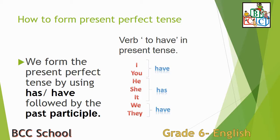First, we have to know the verb 'to have' in the Present Tense: I have, you have, he has, she has, it has, we have, they have.